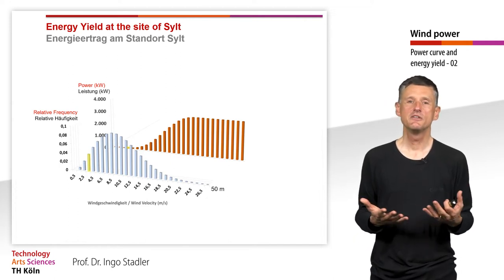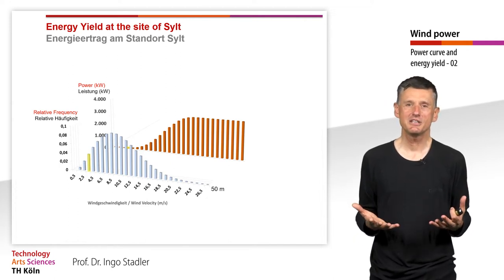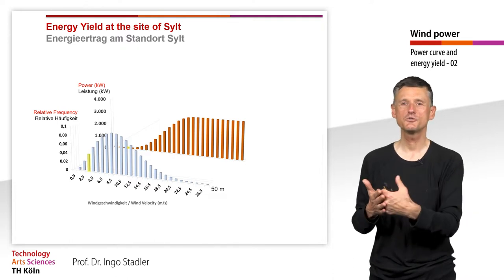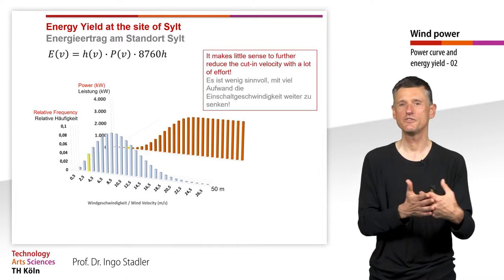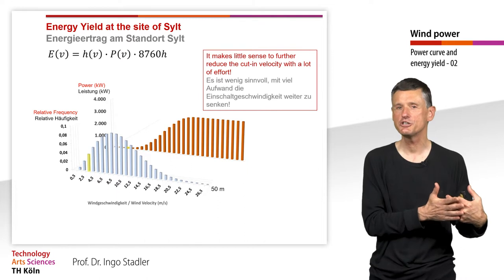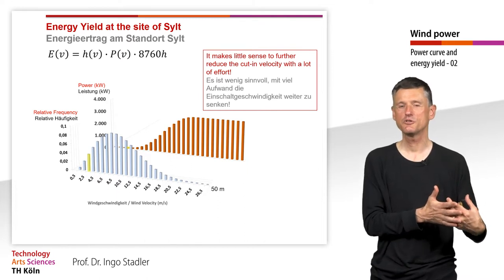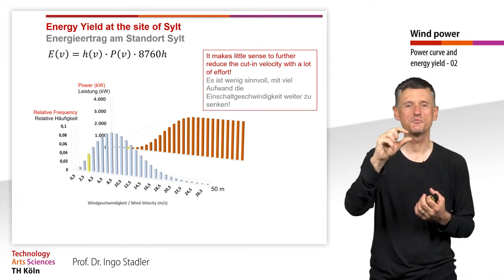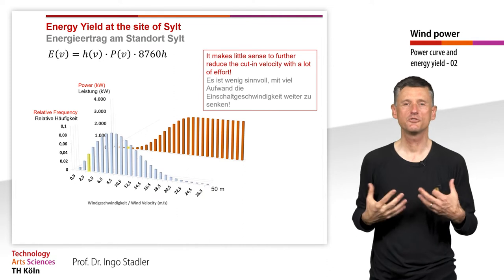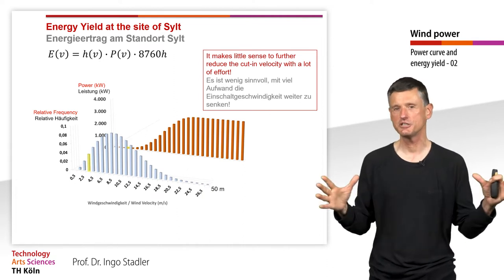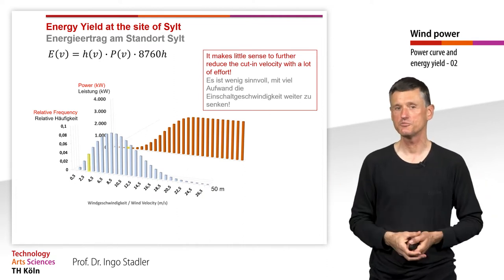We already see it makes little sense to further reduce the cut-in velocity with a lot of engineering effort and costs, because the power output is so small that its contribution to the overall energy yield is negligible.